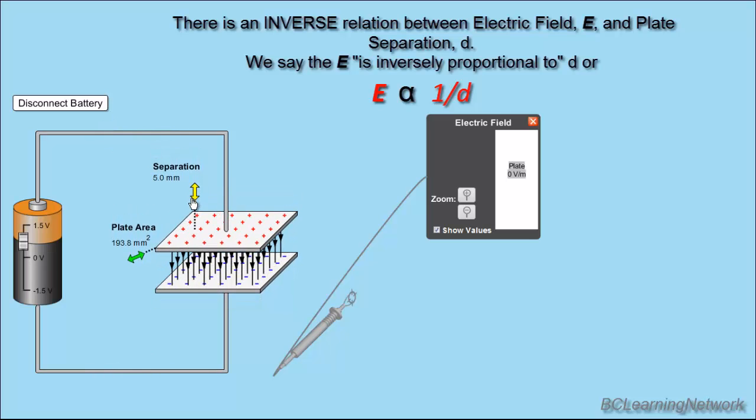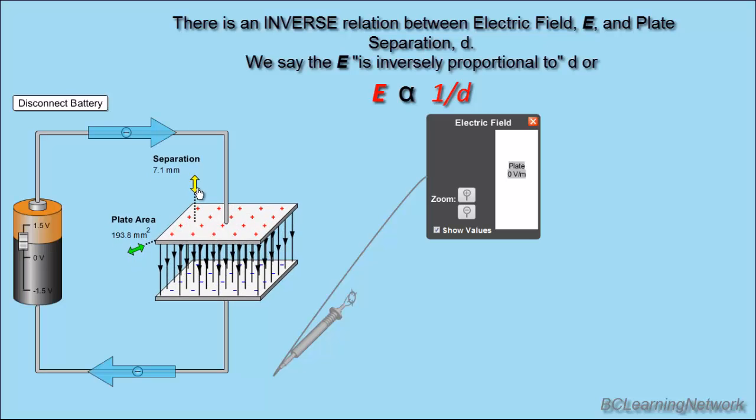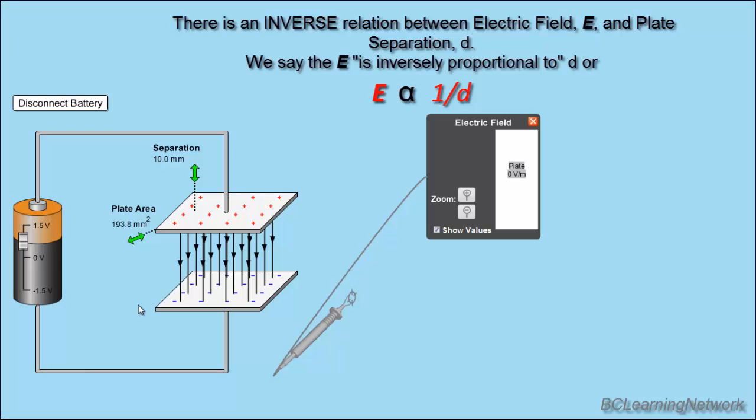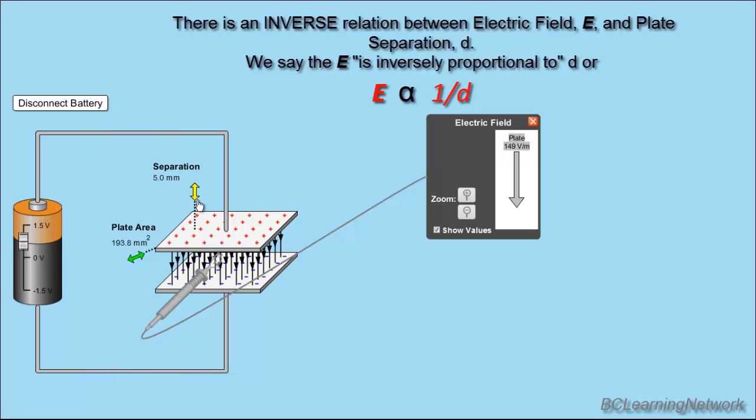Now, that should make sense. If the plates are closer together, the negatives on the bottom plate are closer to the positives on the top and they're able to exert more force. So, you're going to basically suck more charges onto that top plate because these negatives are so nearby. They're going to really be able to pull hard and pile them up on that plate. Whereas, as we get further and further away, because the force varies with distance, the force gets weaker and our electric field, in turn, gets weaker. And, we can see that with our meter. As we're far away, our electric field is 74 volts per meter. And, as I get closer and closer together, my electric field goes all the way up to 149 volts per meter. So, inverse relationship between electric field and plate separation.